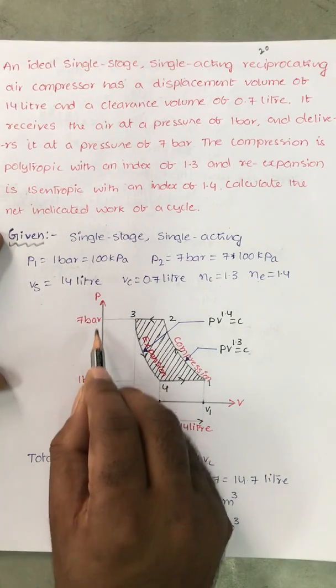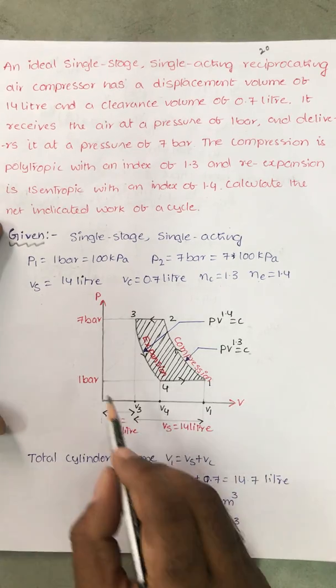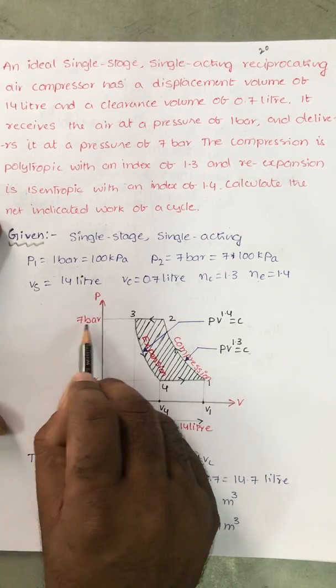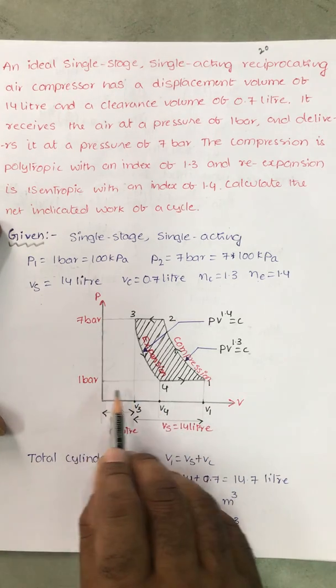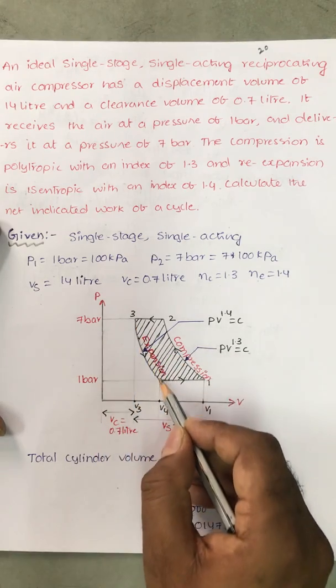See this is the PV plot for the reciprocating air compressor with clearance volume. The air is taken at 1 bar and delivers at 7 bar. This is the suction, compression, delivery and expansion.